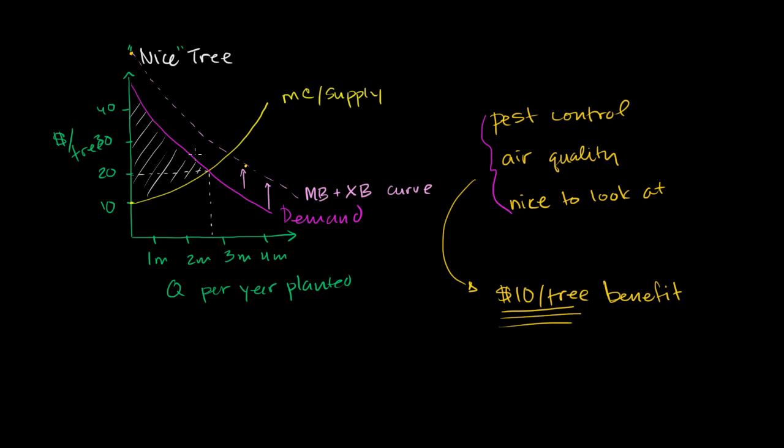So it's factoring in all of the benefit that society is getting by these trees planted. But when you look at that curve, you get a slightly different equilibrium price. The equilibrium price goes all the way out here. So now the equilibrium price goes up to this. The equilibrium price looks closer, instead of $20, it's $27.